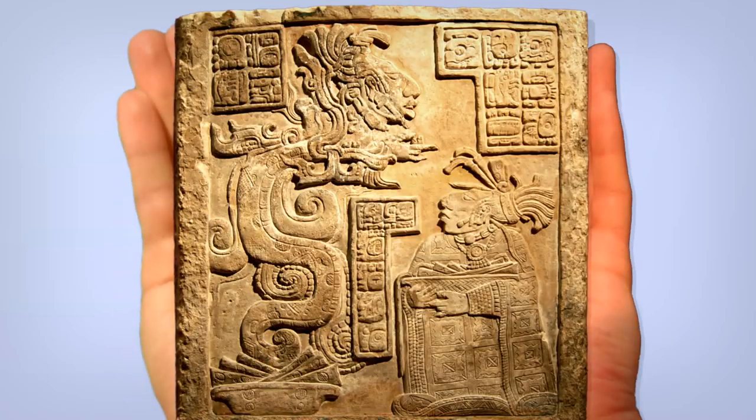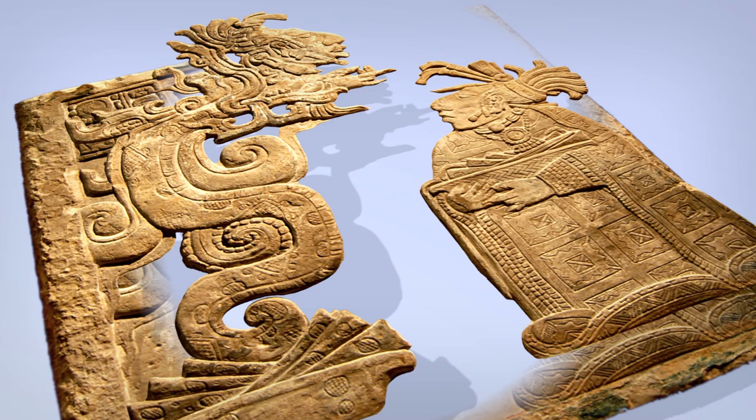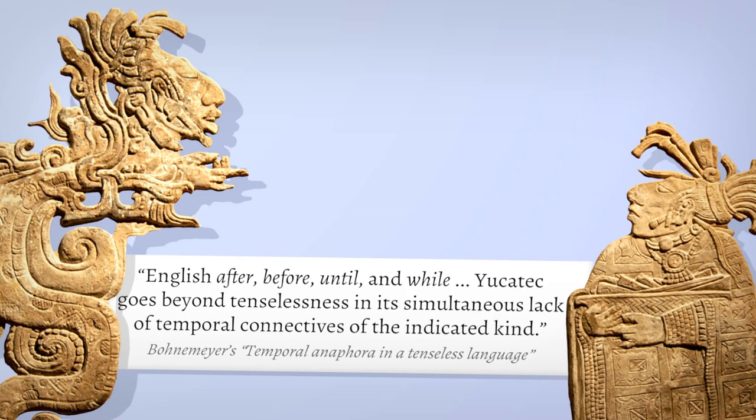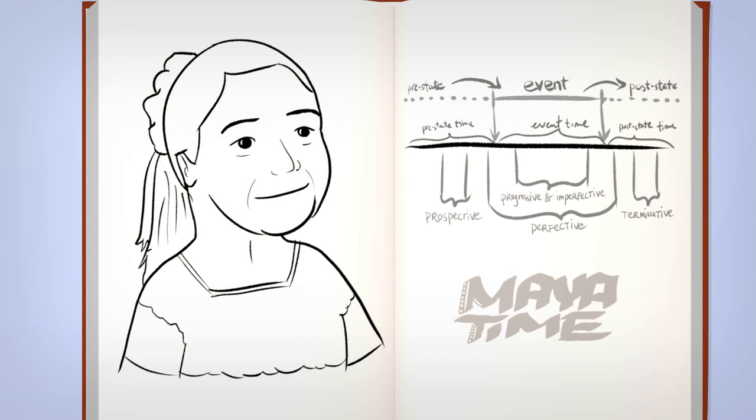Last time, we saw how the Maya have no past, no present, no future tense, and no word for before, until, or after. Despite that, they can still tell stories just fine. This time, I want to take a closer look. Let's explore the complicated details behind how the Maya talk about events in the past.